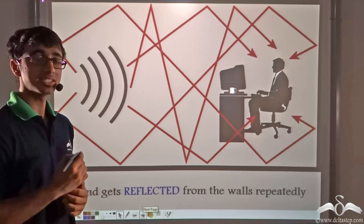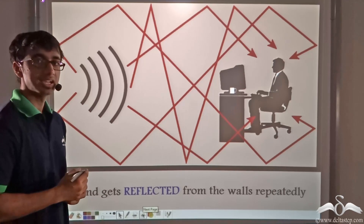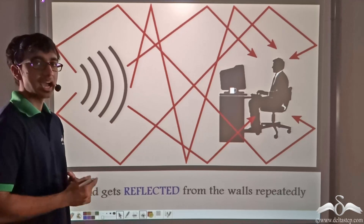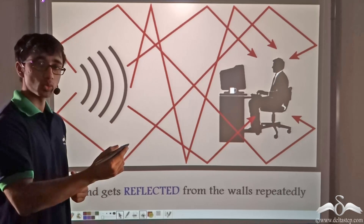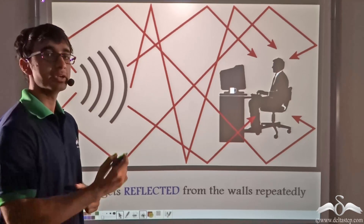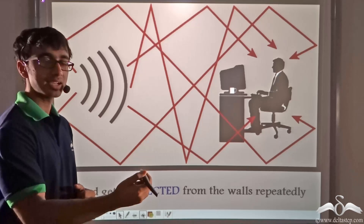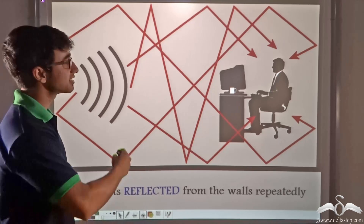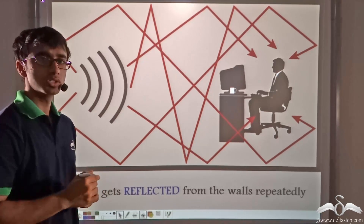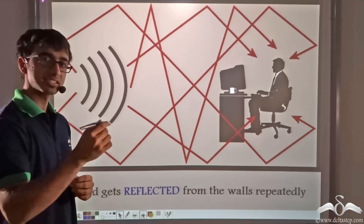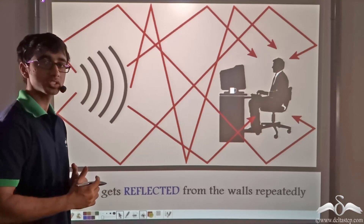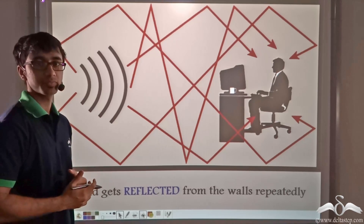...the sound is travelling from the person's mouth and it is hitting the wall in front. After hitting the wall, as we studied earlier, it bounces back and is reflected and reaches the person's ears. Now this sound reaches the person's ears and it also hits the walls that are behind the person.